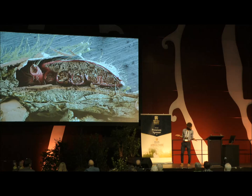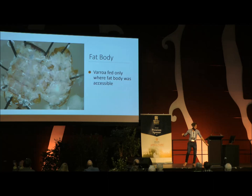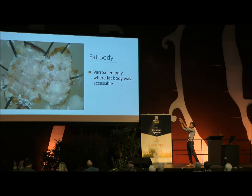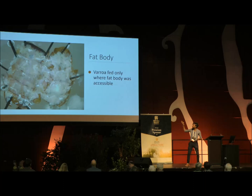Normally that picture gets more oohs and aahs when I unveil it, so I'm a little bit disappointed in this crowd. That is what the fat body tissue looks like inside of a honeybee when it's been dissected. You can cut down the side of your bees, remove the digestive system, and all of that glue that you see on the inside of this body is fat body tissue. It is the largest continuous organ inside of the bee's body, and they need plenty of it for plenty of reasons.